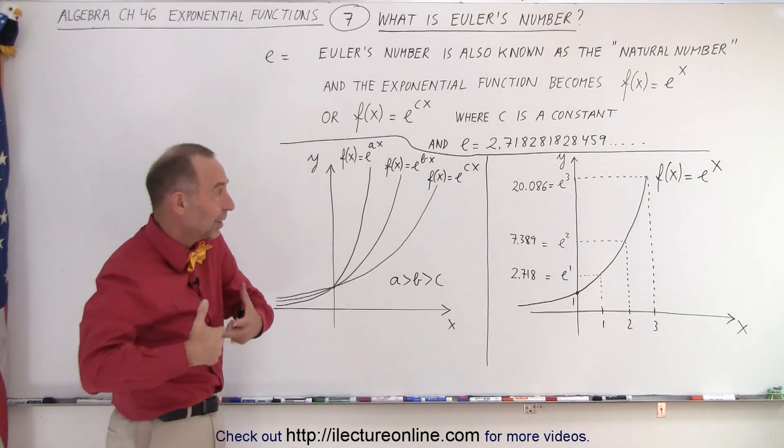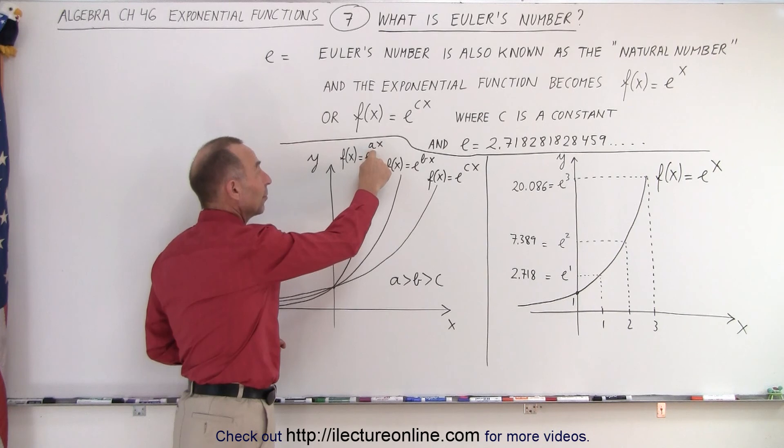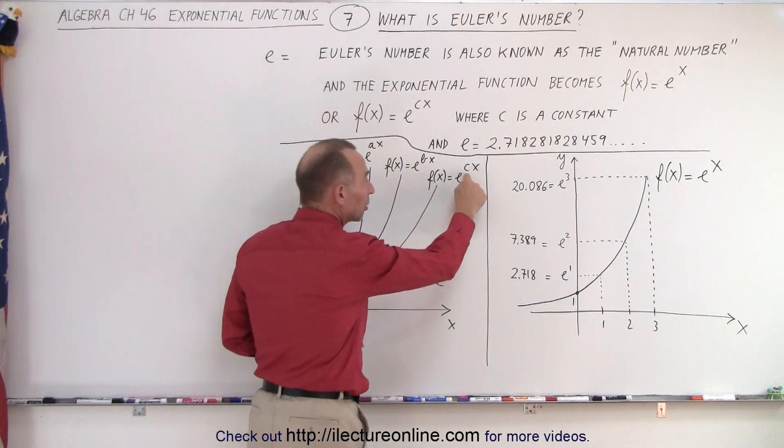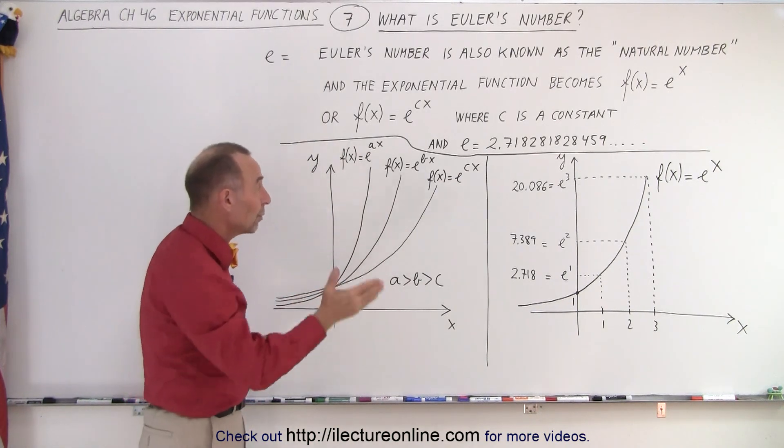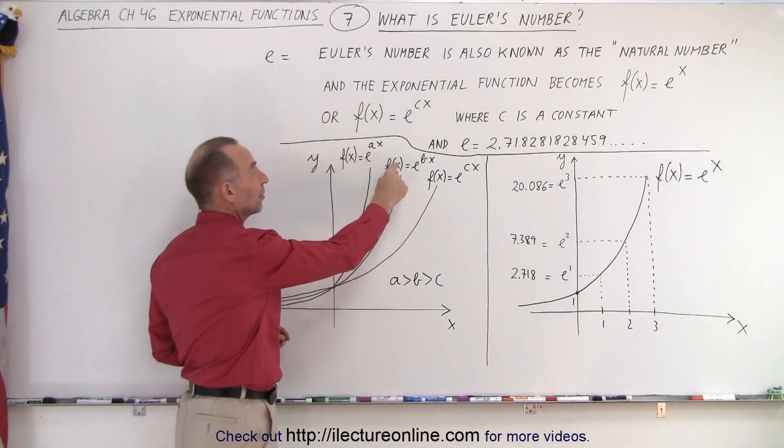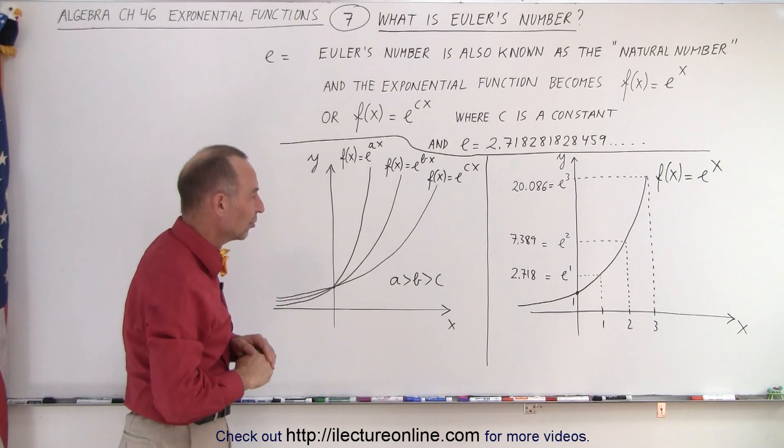And so, when we start talking about exponential growth, if things grow quickly, we have a big constant. If things grow more slowly, we have a small constant. And that's the only difference in the exponential function, the constant we put in front. Of course, we can also put a constant in front that starts with the initial amount, but we'll go into the details later with that.